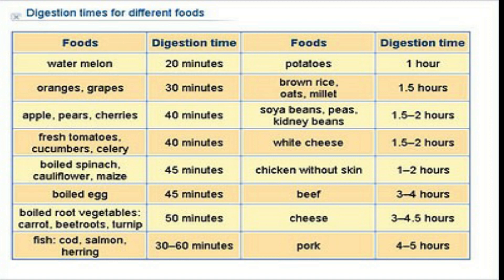Fish like cod and salmon need 30 to 60 minutes to digest, and pork needs four to five hours. Fruits and vegetables take around 20 to 30 minutes — much less time — while meats and cheeses take hours. You should eat healthy food and try to avoid junk food, given how long it takes to digest.